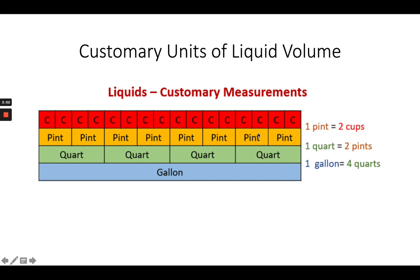And you can see here, this kind of shows you how many cups are in a pint and how many pints are in a quart and so forth. So we can see that two cups equal one pint, two pints equal one quart, and then four quarts equal one gallon or 16 cups equal a gallon.